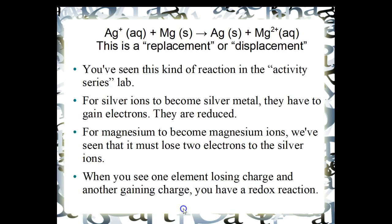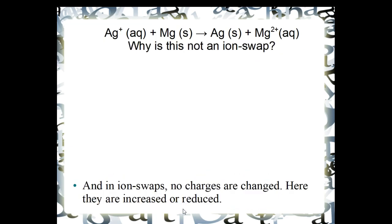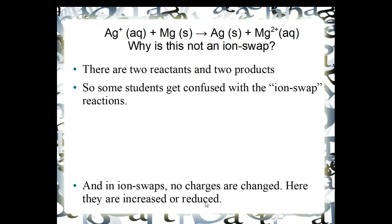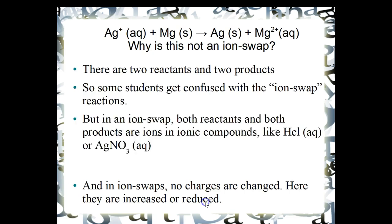One last point. Why is this not an ion swap, what we just looked at? Well, there are two reactants and two products, so some students get confused and think that this is an ion swap, but it's not. In an ion swap, both reactants and both products are ions in ionic compounds, like HCl or silver nitrate, and both are in aqueous solution.